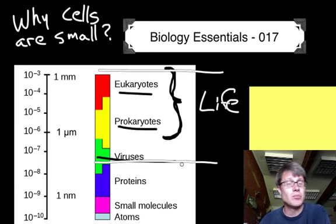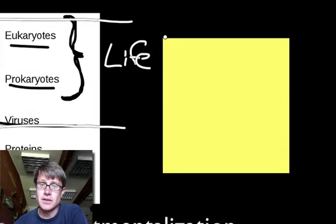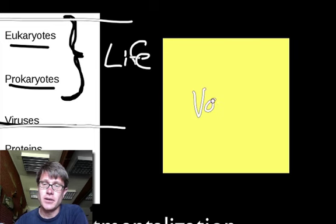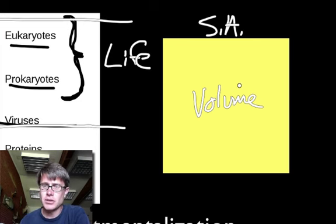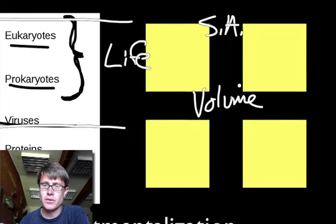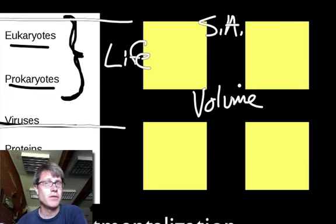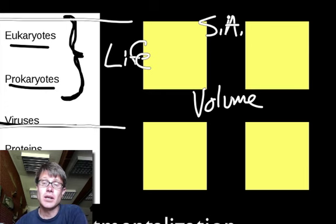So why are cells small but not too small? If we think about it, let's look at a cell here. So this is the cell membrane that goes around the outside. It's got a certain amount of volume on the inside, and then it has surface area that goes around the outside. But if I were to cut that cell into four parts, what would happen to the volume? The volume would stay the same, but the surface area would increase, because we would have all this surface area on the inside.